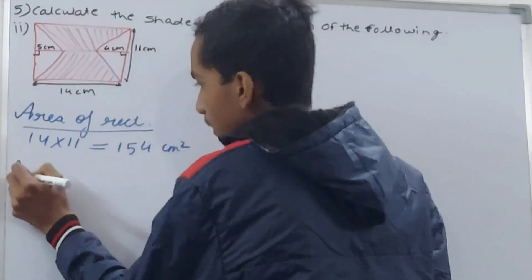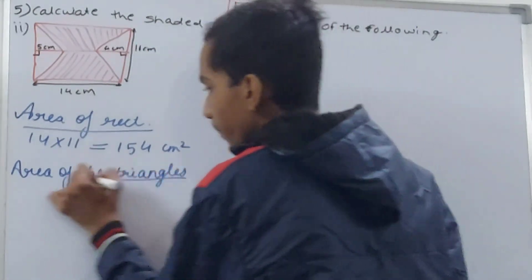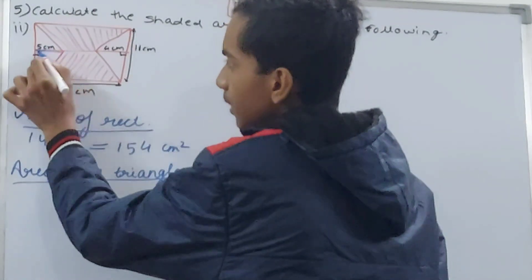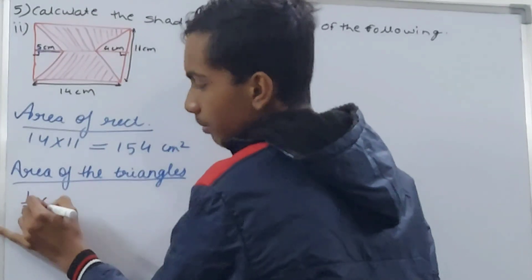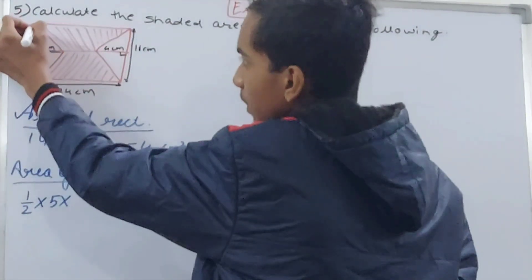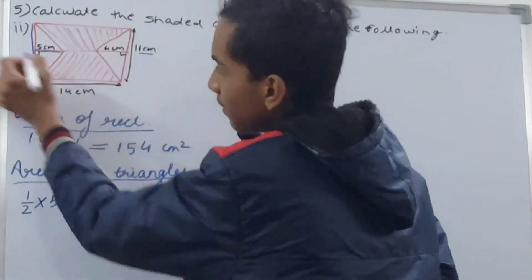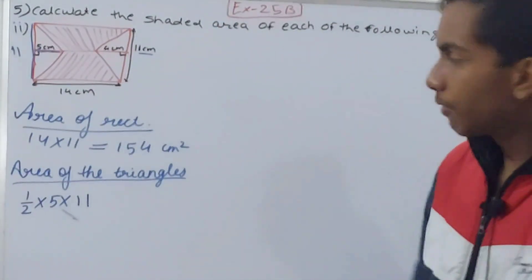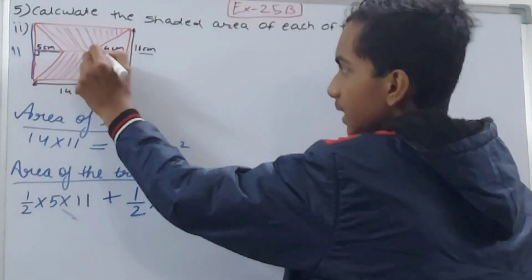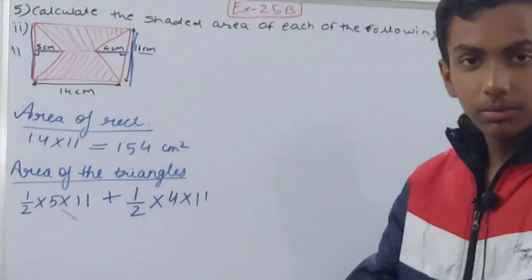Now we calculate the areas of both triangles. For the first triangle, the height is 5 centimeters and the base is 11 centimeters, so: ½ × 5 × 11. For the second triangle, the height is 4 centimeters and the base is also 11 centimeters, so plus ½ × 4 × 11.